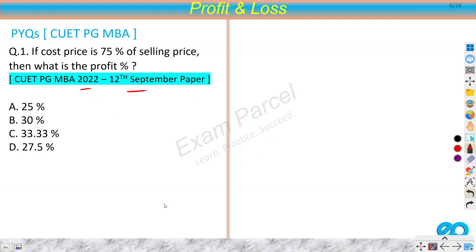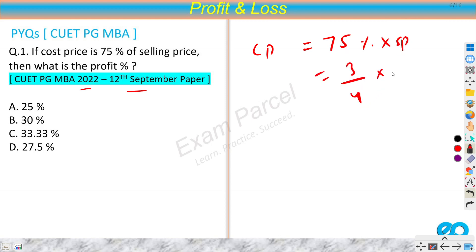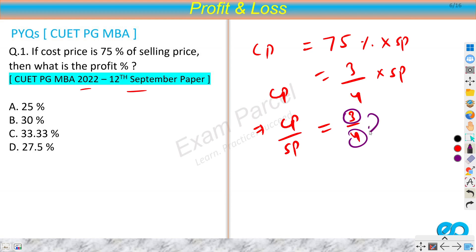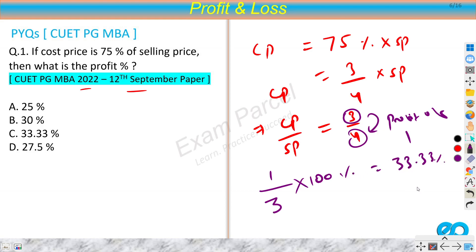The first question is from the 2022 September paper: if cost price is 75% of selling price, what is the profit percent? We can write 75% as 3/4, so CP = (3/4) × SP, giving us the ratio CP:SP = 3:4. There is a profit of 1 on a cost price of 3, so profit percent = (1/3) × 100 = 33.33%, which is option C.